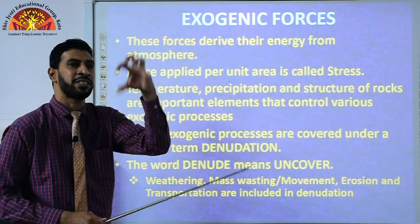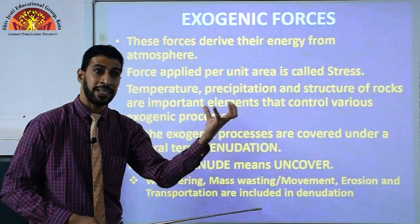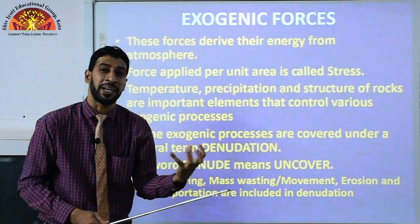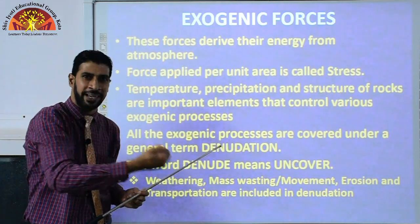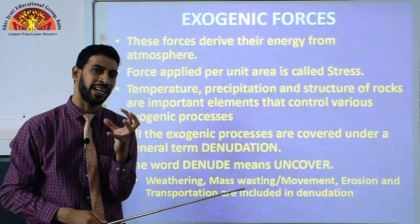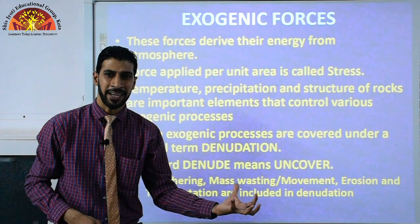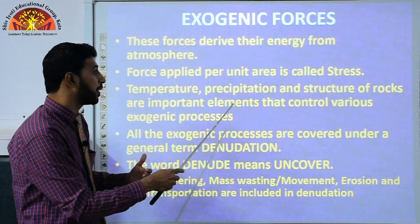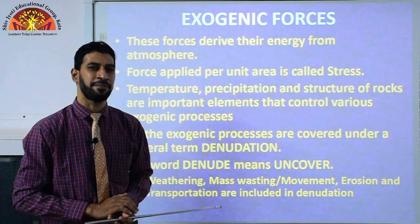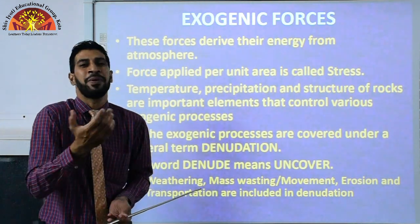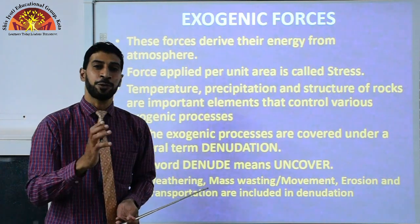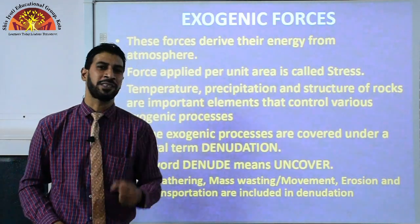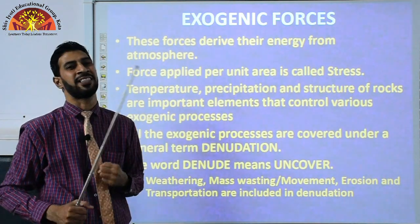Temperature refers to how hot or cold a place is. Precipitation means rainfall — in areas where there is a lot of rainfall, it destroys the parent rock more. The parent rock is the rock from which soil is formed. Structure of rock is also important — not all rocks are the same. Some rocks are very strong and some are very weak. Where there is a lot of heat and rain, the weak rocks will break apart, while hard rocks will not break so easily.